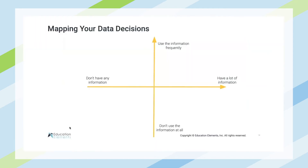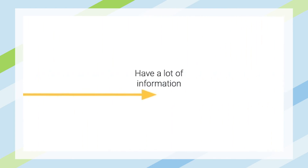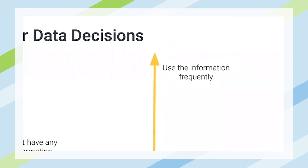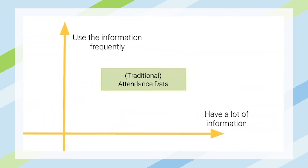I want to give you some examples in a two-by-two framework. The horizontal axis is the first decision — what you decide to collect, ranging from no information to a lot. The vertical axis is the second decision — you don't use the information at all, or you use it all the time. Traditional attendance status is a great example of information we have a lot of and certainly use a lot — it appears on report cards, there are policies around reporting it, and sometimes funding is attached to it.